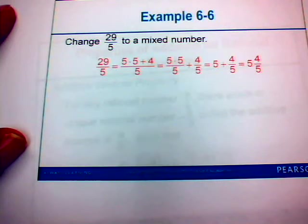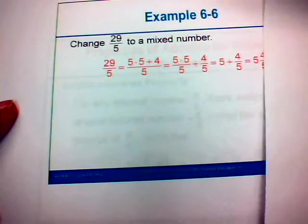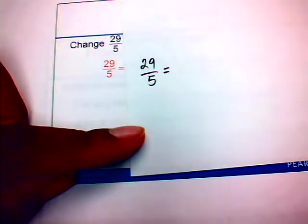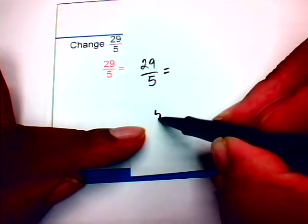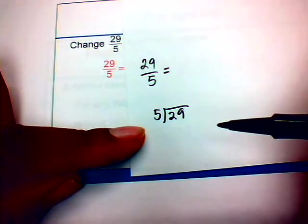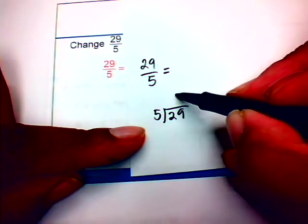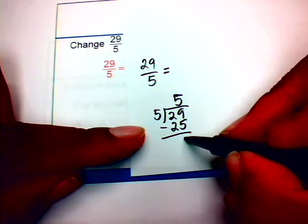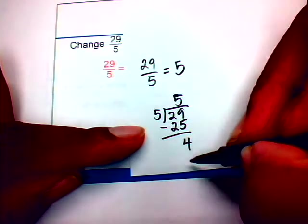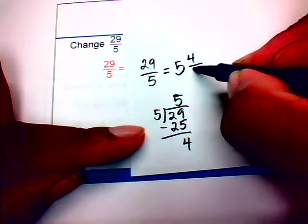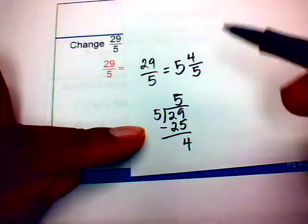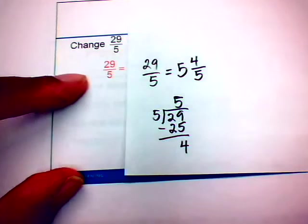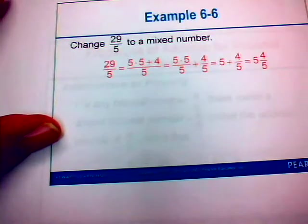Also, twenty-nine over five can be changed to a mixed number using long division. Find how many times five goes into twenty-nine — that's five times. Five times five is twenty-five; twenty-nine minus twenty-five gives a remainder of four. The whole number is the quotient, which is five; the remainder of four is the numerator; and the denominator remains five. So twenty-nine fifths as a mixed number is five and four-fifths.